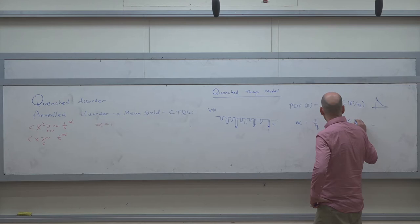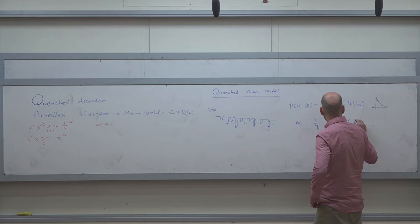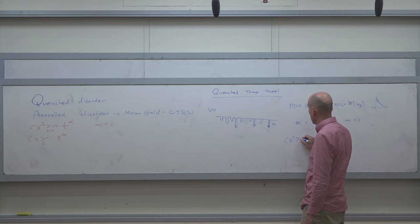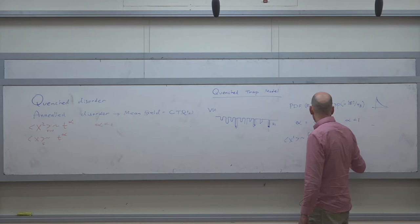When alpha is less than one, meaning T less than T_g, the mean square displacement goes like T to the alpha — anomalous diffusion. When T is greater than T_g, you get normal diffusion with MSD going like T. So either you are anomalous or normal depending on the temperature relative to T_g.